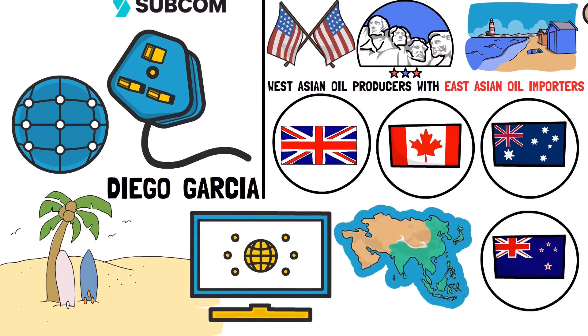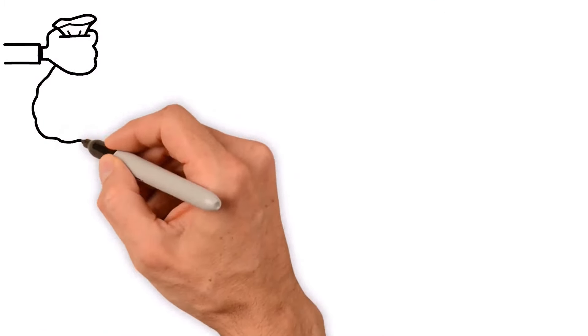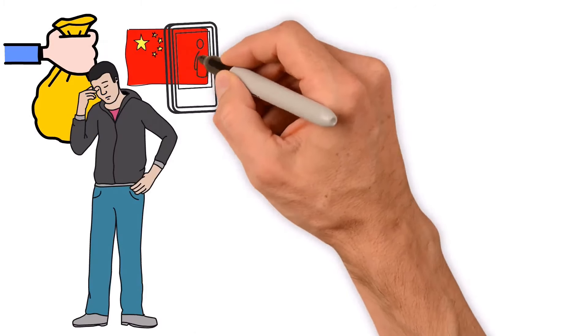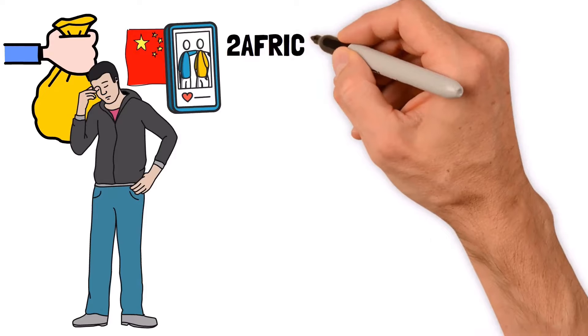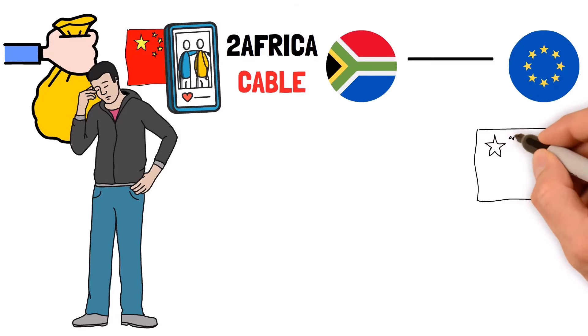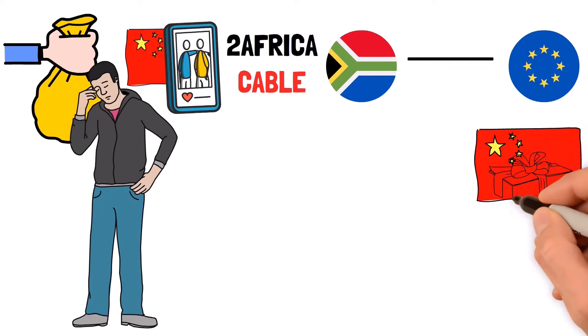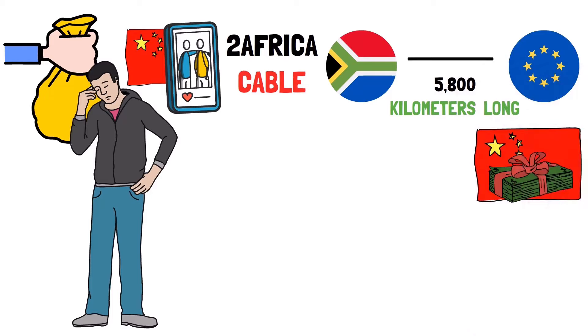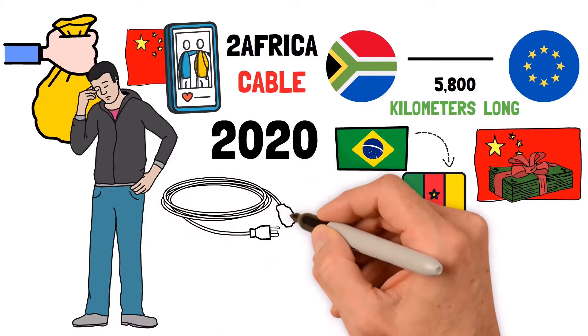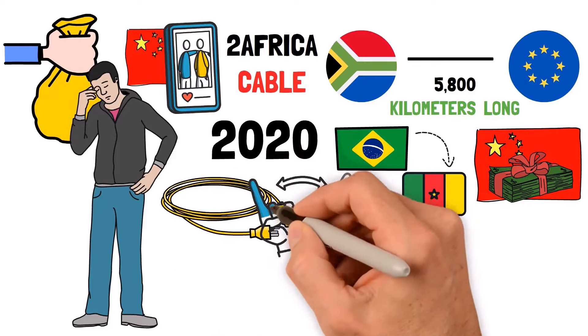On the other side, China's involvement in the Indian Ocean is not as big. They mostly invested in cables before they started having problems with their tech companies. One of the Chinese companies, China Mobile, helped make the Two Africa cable that connects Africa to Europe. Another one, China Unicom, put money into the SAIL cable which is 5,800 kilometers long and connects Brazil to Cameroon. That one started working in 2020 but there haven't been many Chinese cables reaching Western countries recently.